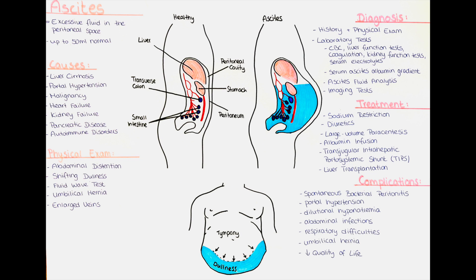Ascites can also develop due to increased pressure within the portal vein system, a major blood vessel that carries blood from the digestive organs to the liver. Portal hypertension can be caused by liver cirrhosis, hepatic vein obstruction as in the Budd-Chiari syndrome, or portal vein thrombosis.